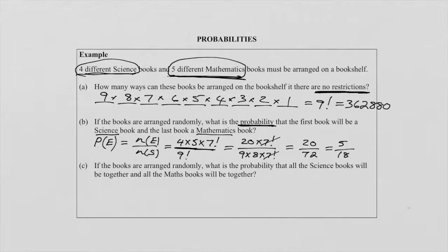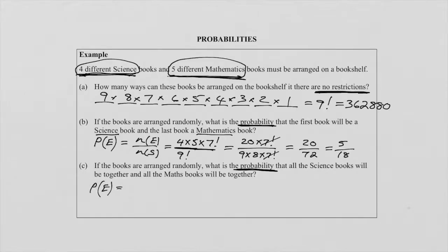Let's look now at part C. Please remember, we have four different science books and five different mathematics books, a total of nine. With no restriction, it's nine factorial ways to do it. In part B they restricted positions, so in part C you can already expect them to give us a grouping. They say: if the books are arranged randomly, what is the probability? When you see they want probability, please write down your formula — the probability of any event is how many in that event over how many in the sample space. The sample space is nine factorial because that is no restrictions — always that is your sample space.